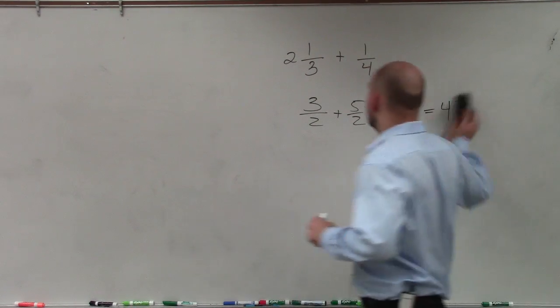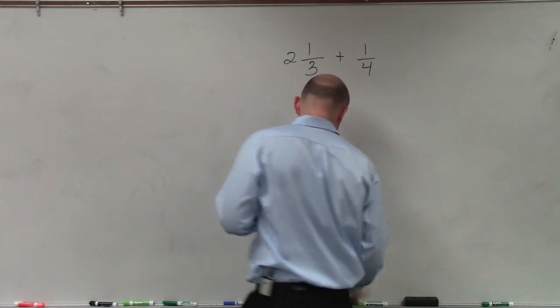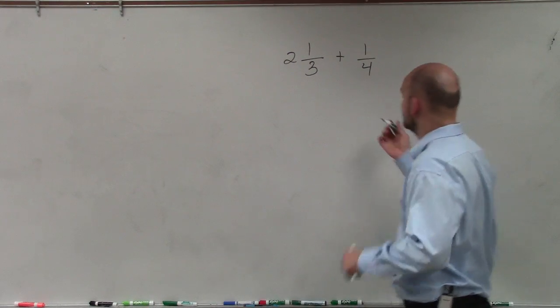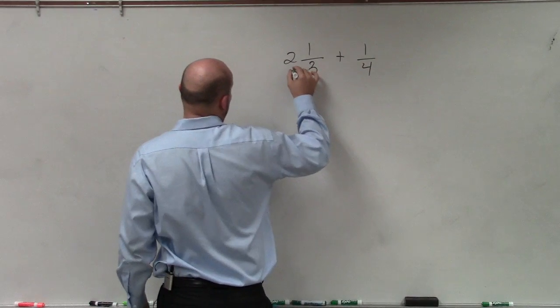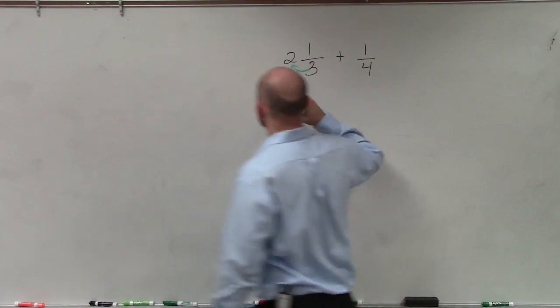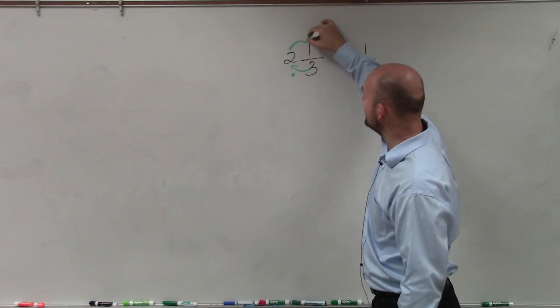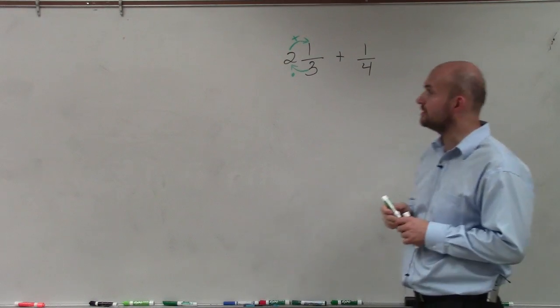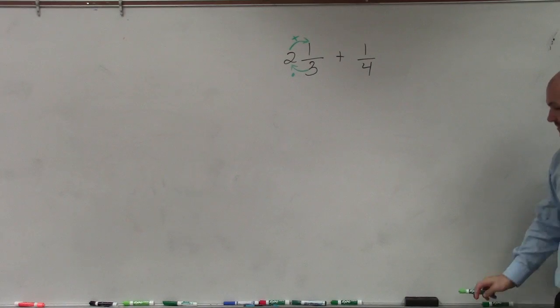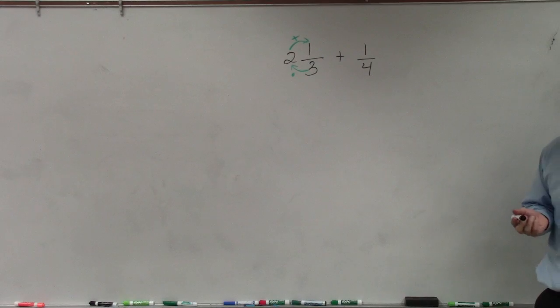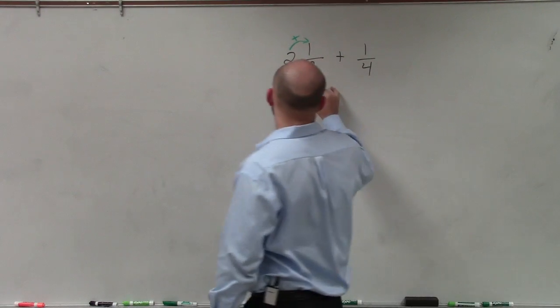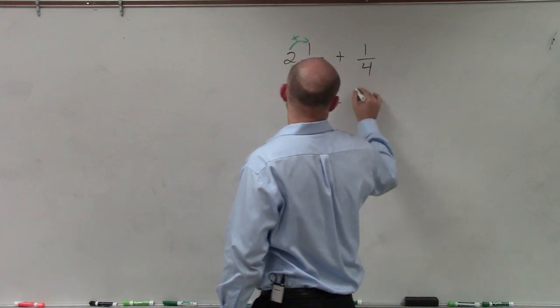Now in this case, we have a mixed number added to a fraction. So the first thing we need to do is convert our mixed number into a fraction. So to do that, we multiply our denominator times our whole number, and then add that to our numerator. So my improper fraction would now be 2 times 3, which is 6, plus 1 is 7. So I have 7 thirds plus 1 fourth.